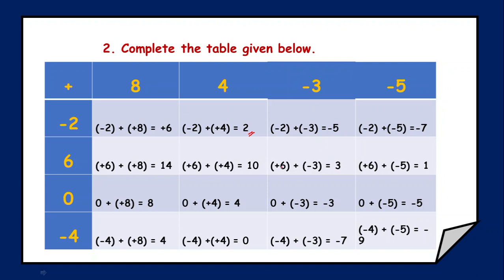6 and minus 3 — subtract, answer is plus 3. 6 and minus 5 — different signs, subtract: 6 minus 5 is 1, with sign of greater number plus. And for 0: addition with 0 makes no change — 0 plus 8 is 8, 0 plus 4 is 4, 0 plus minus 3 is minus 3, and 0 plus minus 5 is minus 5. Then minus 4 and 8 — different signs, subtract to get 4 with sign of greater number plus. Minus 4 plus 4 — same value with opposite signs, equals 0. Minus 4 minus 3 — same sign, add to get 7 with sign minus. Minus 4 minus 5 — same sign, add to get 9 with sign minus.